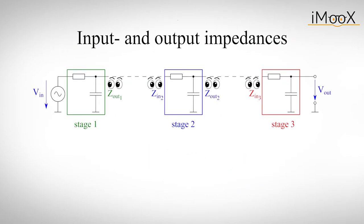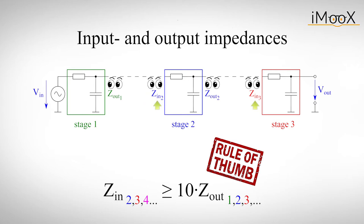This can only work if we keep the input and output impedance of each individual stage in mind. Every additional stage will always influence the behavior of the previous one. A good rule of thumb is to ensure that the input impedance of every stage is at least 10 times larger than the output impedance of the previous one. But how can we calculate these impedances?